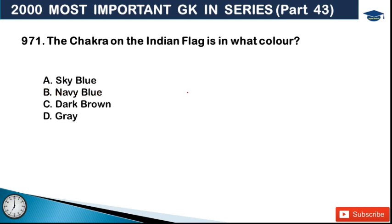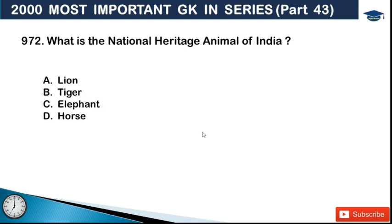Next: the chakra on the Indian flag is in what color? The Ashok Chakra color is navy blue, so option B is the correct answer. Next: what is the national heritage animal of India? Options are lion, tiger, elephant, and horse. The answer is option C - the elephant (haati) is our national heritage animal.